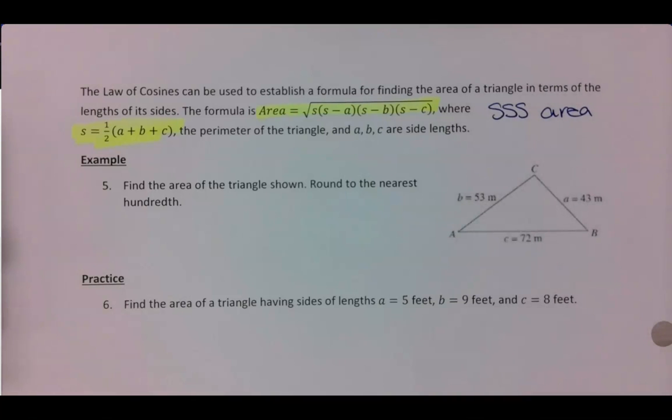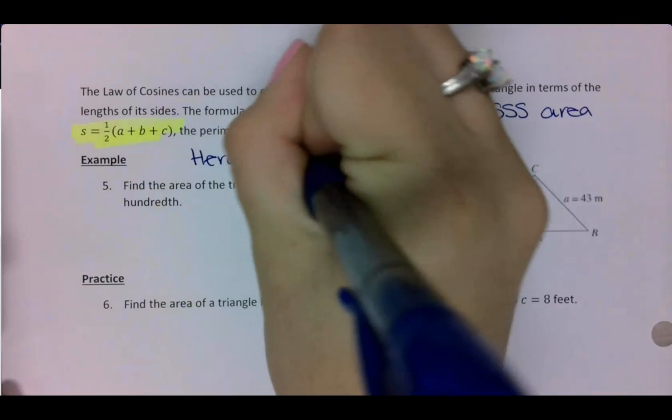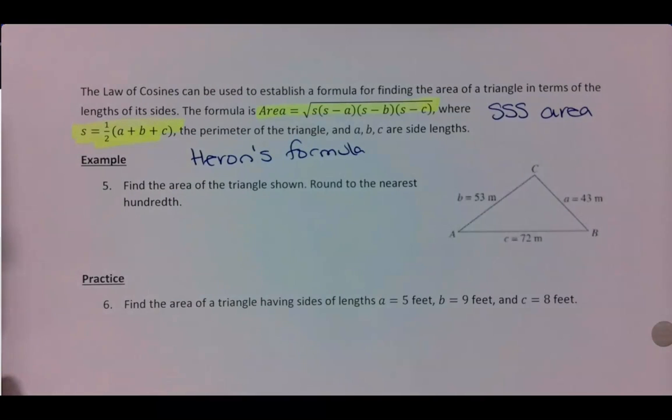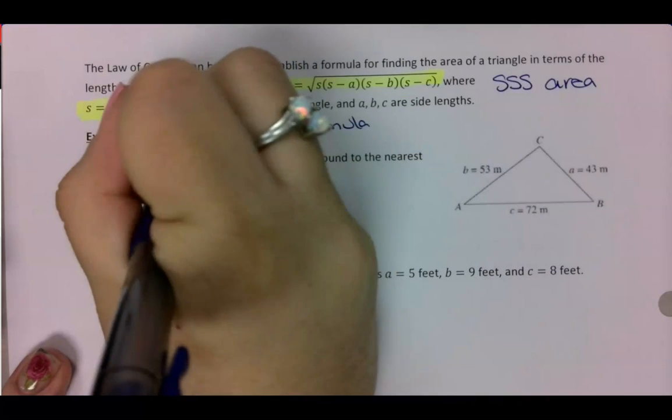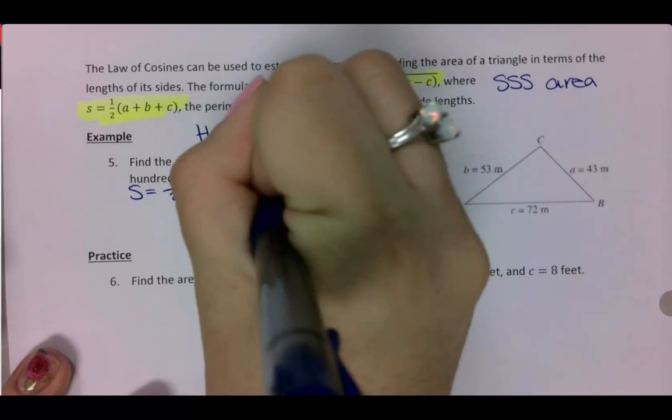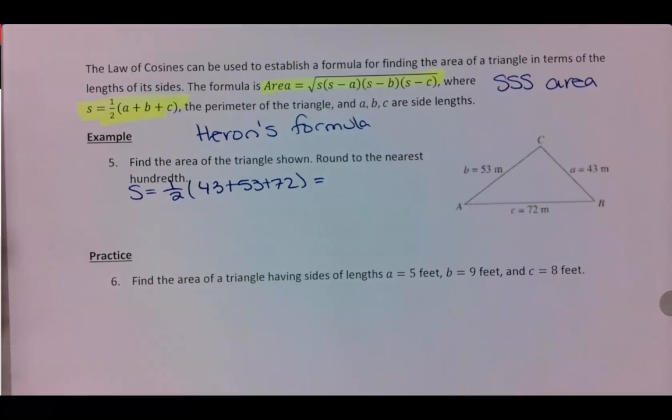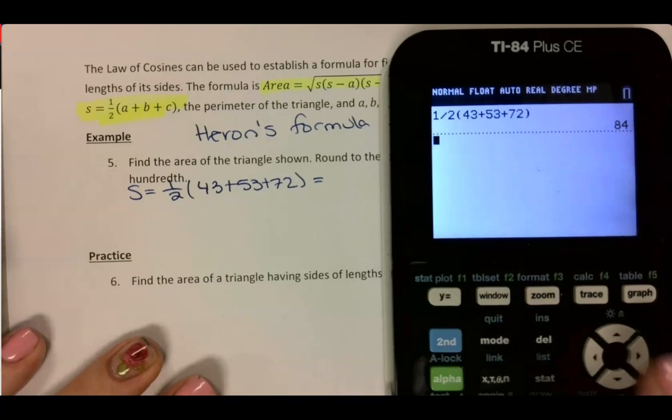So I forgot to type this on the paper, the name of the formula is Heron's formula. Then I just need to go ahead and plug in to solve. So I will be giving you these formulas on the test and quiz as well. So first thing I want to do here is I want to solve for s. I have one half, 43 plus 53 plus 72. I want to go ahead and type these into my calculator, which gets me 84 for my s value.